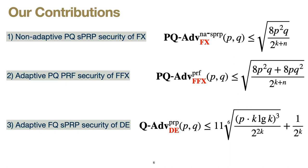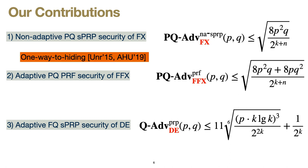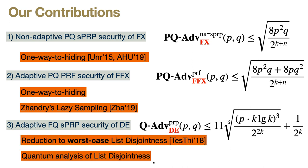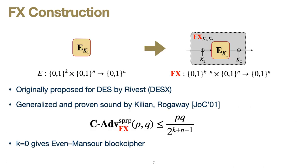In terms of techniques: our first non-adaptive proof relies on a careful application of one-way-to-hiding results. Our adaptive proof for FFX uses both one-way-to-hiding and Zandry's technique for lazily sampling a random function. Finally, our fully quantum proof for double encryption relies on a reduction to a worst-case list disjointness problem and then quantum analysis of the hardness of list disjointness. I'll delve into these one at a time in slightly more detail.